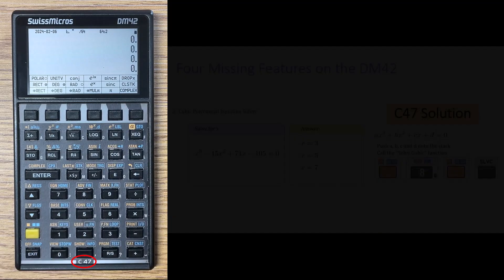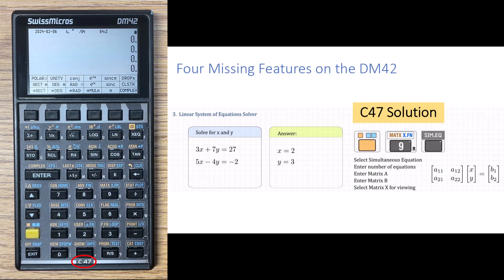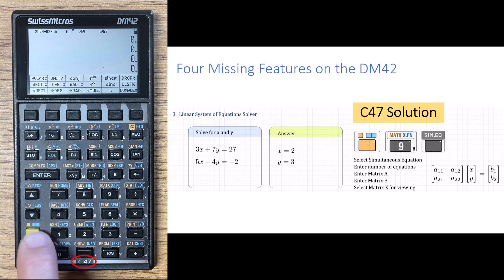And now these next two are going to get a little more involved. So the third problem that Scott points out is solving a linear system of equations. The C-47 uses a very similar approach to the DM-42 for this, but it's maybe a little nicer because you can see the matrices as you do this.